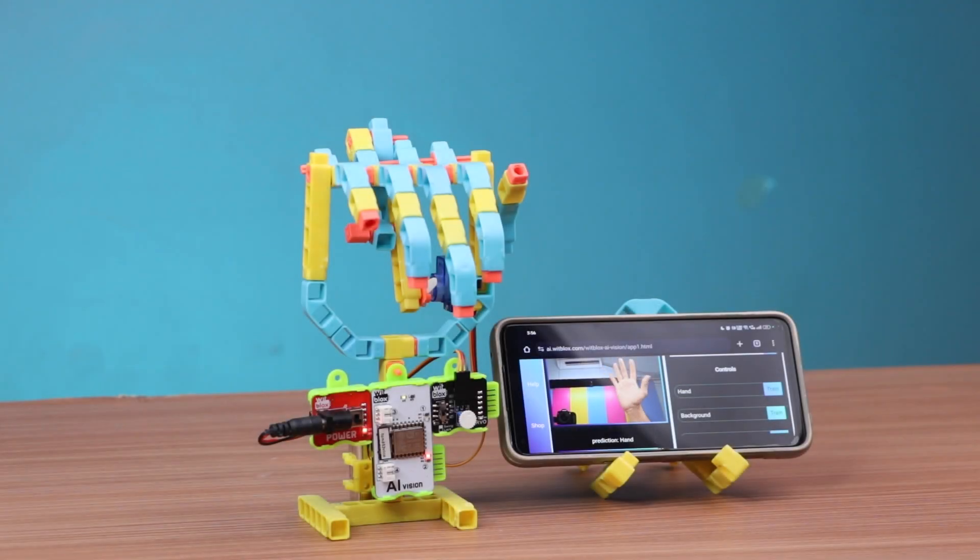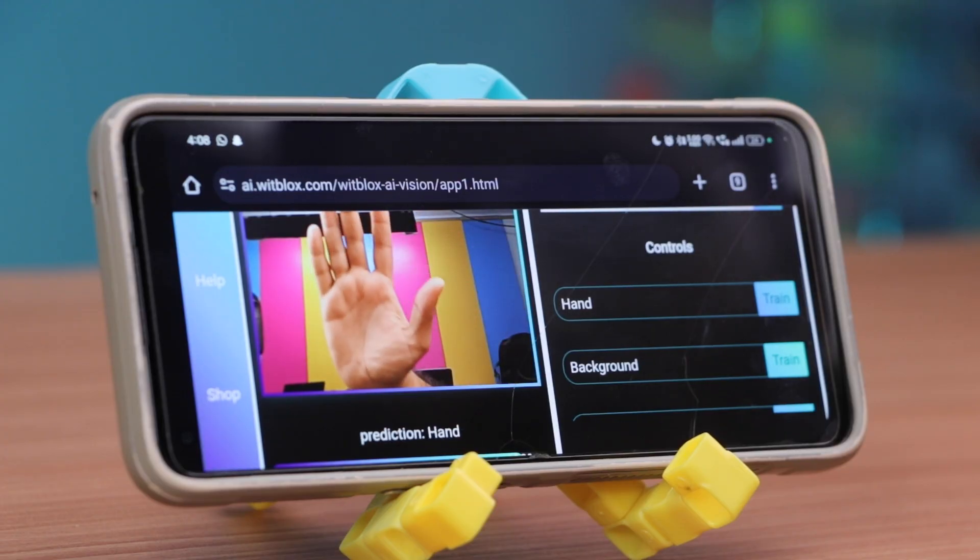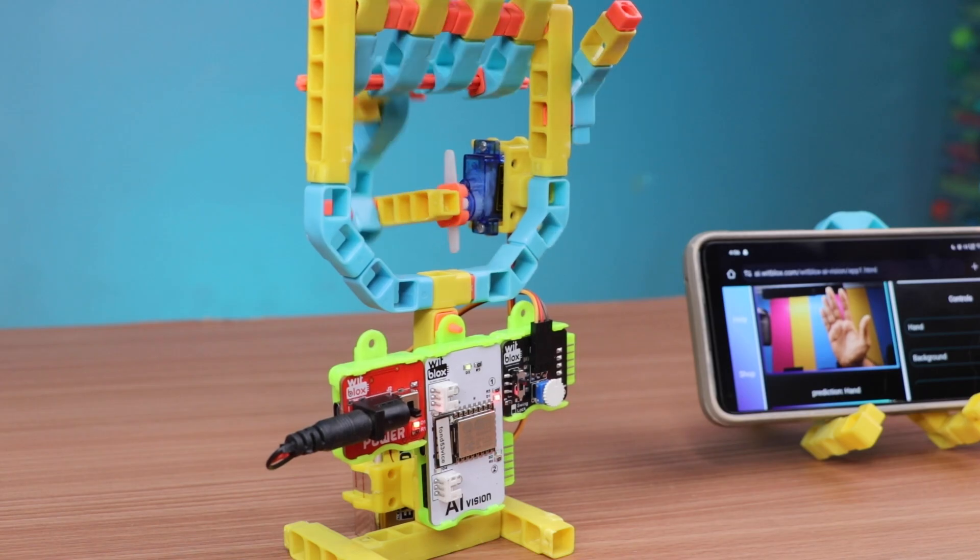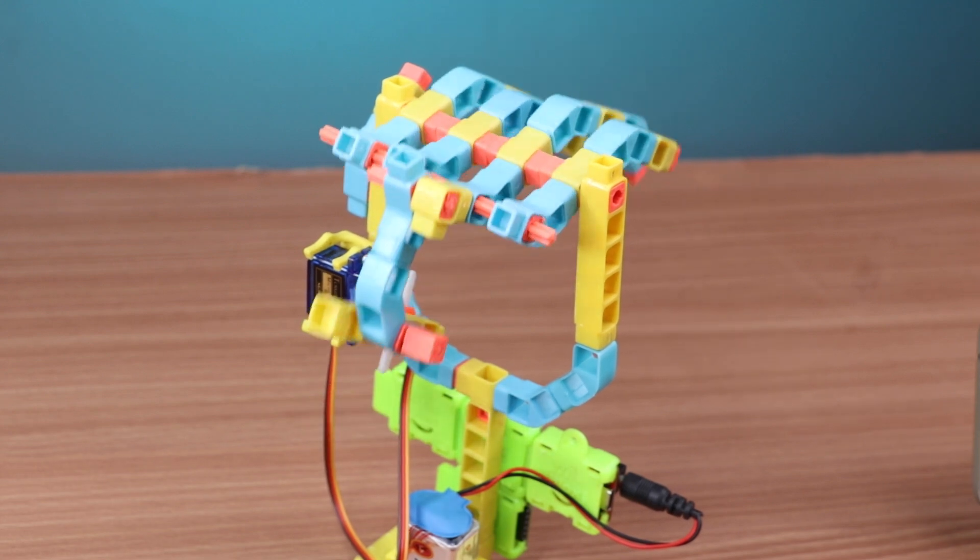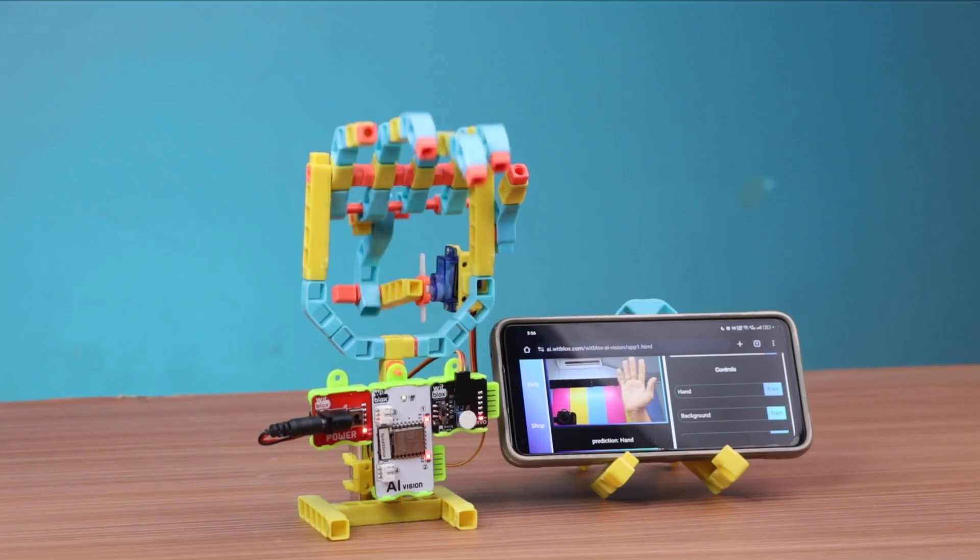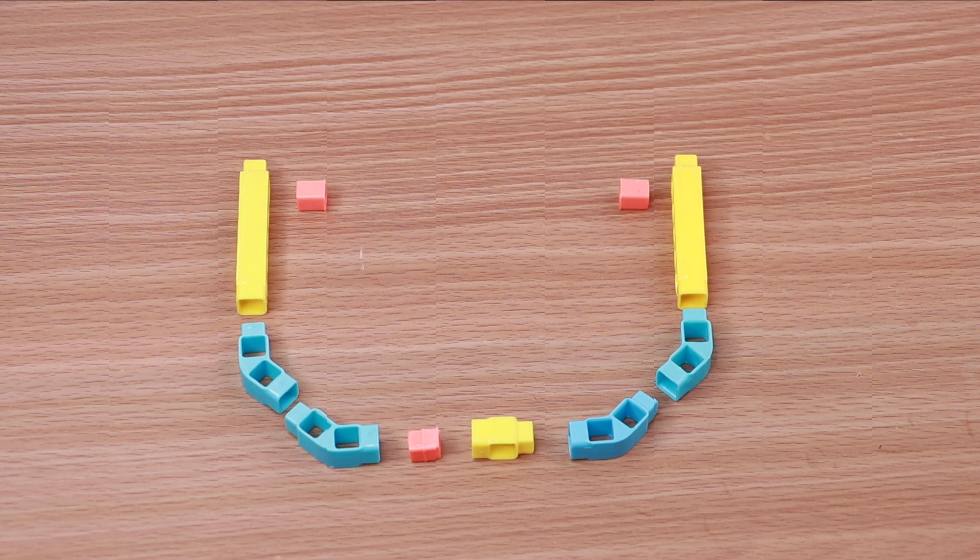Today we are going to build an AI hand that will detect and work on a hand gesture. When the hand gesture is detected it will move a mechanism that resembles a hand. The hand mechanism shall be driven by a servo motor and will perform a waving action. Let's get started.